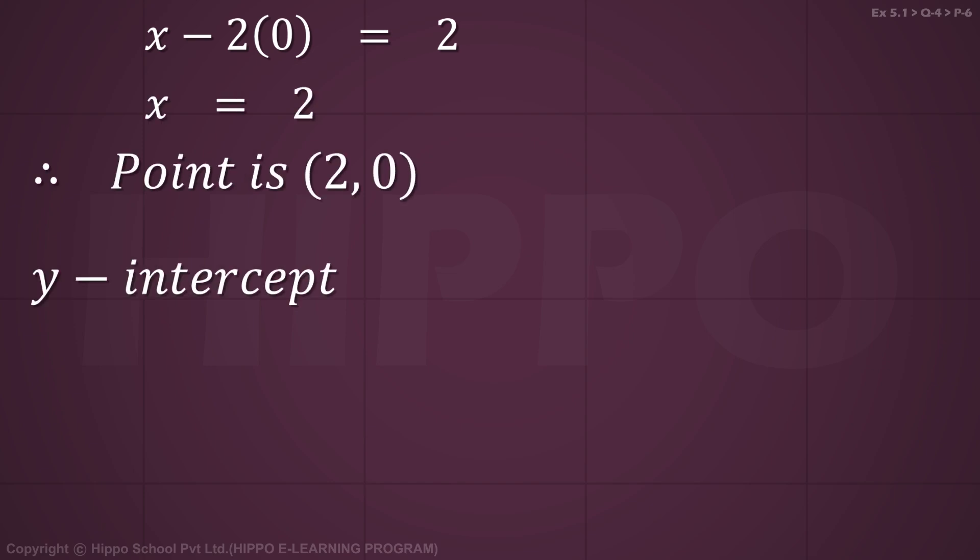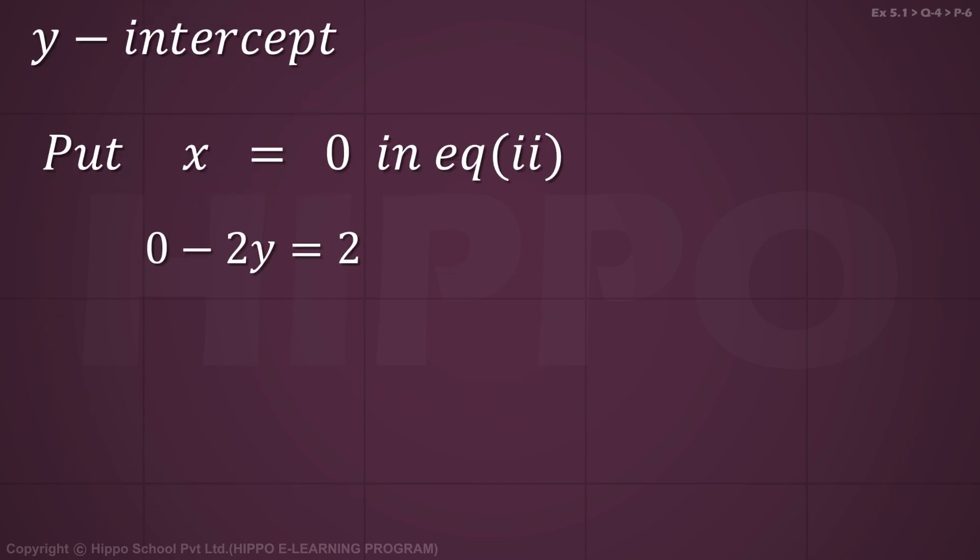For the y-intercept, put x equals 0 in equation number 2. So 0 minus 2y equals 2. Y equals 2 by minus 2, which equals minus 1. So the point is (0,-1).